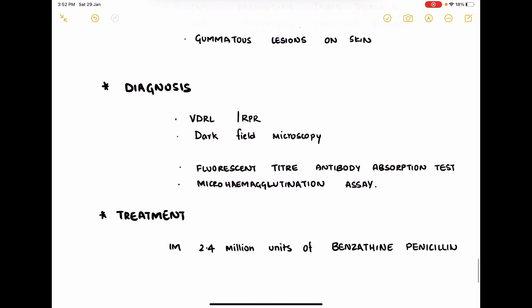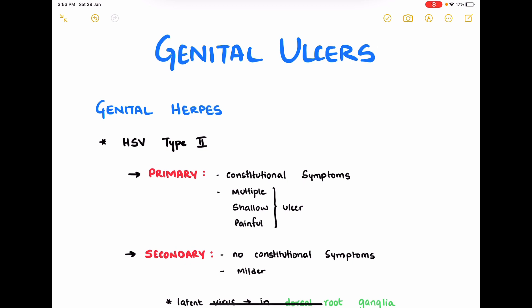For treatment, intramuscular injection of 2.4 million units of benzathine penicillin is effective.